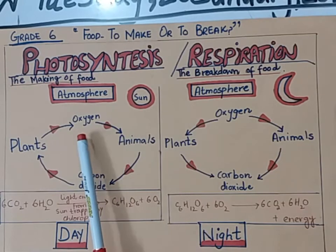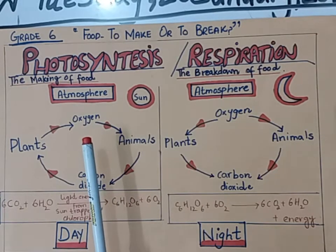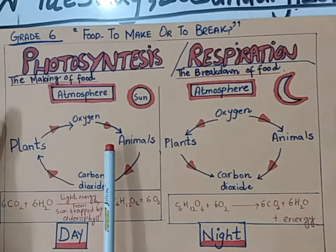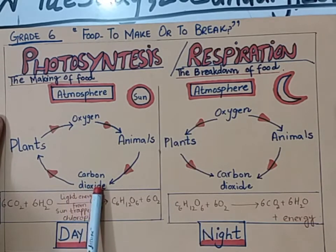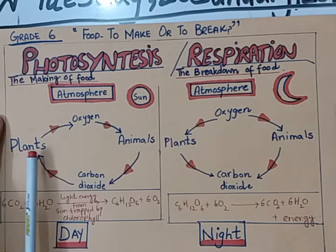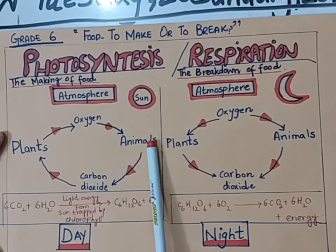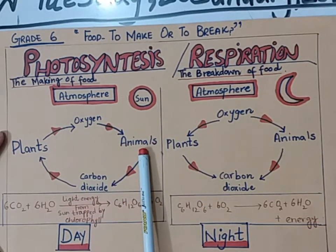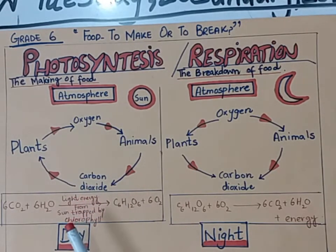We intake oxygen during respiration and release carbon dioxide. Animals release carbon dioxide during respiration, and this carbon dioxide is then used by the plants for the process of photosynthesis. The carbon dioxide shown in the diagram actually comes from animals during the exhalation of air. So this is the process which takes place during the day.